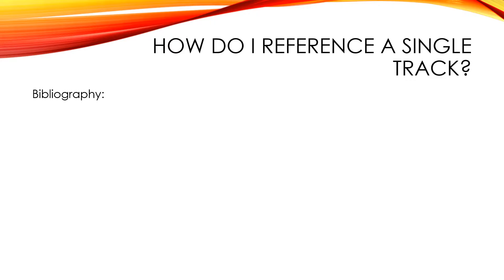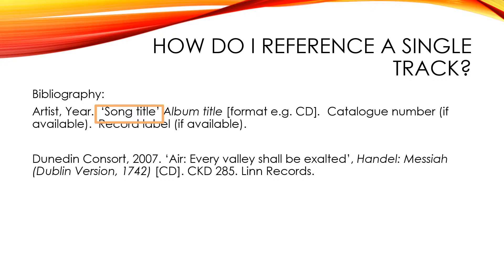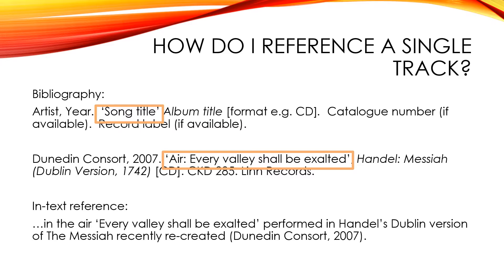Sometimes you might just want to reference a single track rather than a whole album. The format is essentially the same as referencing a single chapter in an edited book — after the year, we simply include the title of the individual track in inverted commas. Here is an example of how to reference the track 'Every Valley Shall Be Exalted' from the Dunedin Consort's album Handel Messiah. When it comes to in-text referencing, this is a little different. Unlike a book, where we would include the page number, we wouldn't normally do this for an album, though I would encourage you to include a specific reference to the title of the track in the body of the text to make it clear to the reader what is being referred to.